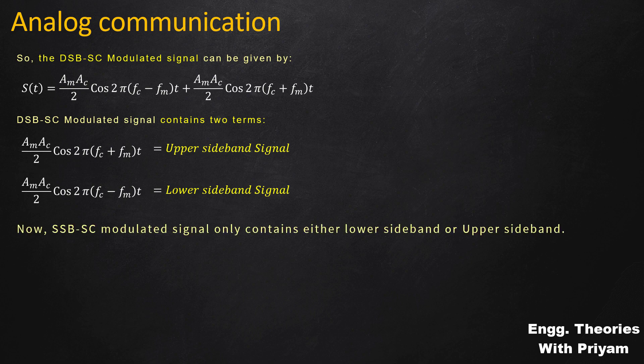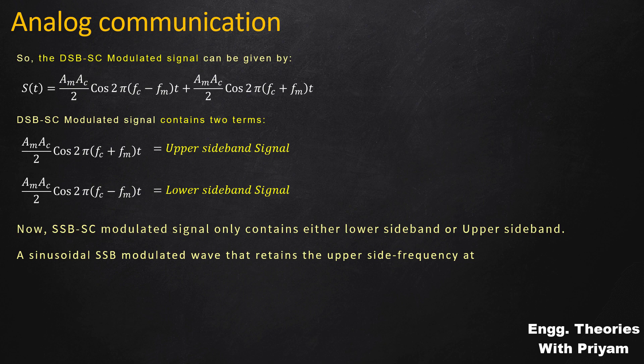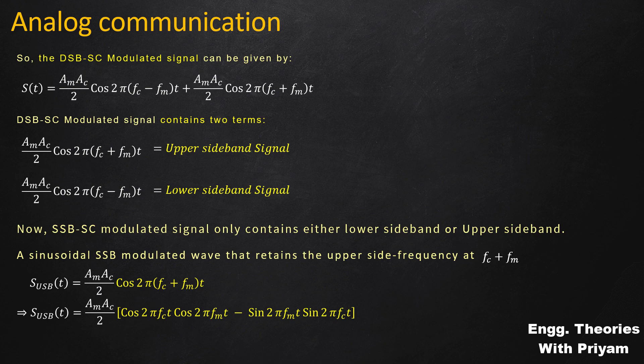The DSBSC modulated signal contains both upper and lower sidebands. Suppose we would like to generate a SSBSC signal retaining the upper sideband frequency at fc+fm. We define the upper sideband signal as (Am·Ac/2)·cos(2π(fc+fm)t). Applying the formula cos(A+B) = cosA·cosB − sinA·sinB, the upper sideband signal expands to (Am·Ac/2)·cos(2π·fc·t)·cos(2π·fm·t) minus (Am·Ac/2)·sin(2π·fc·t)·sin(2π·fm·t).